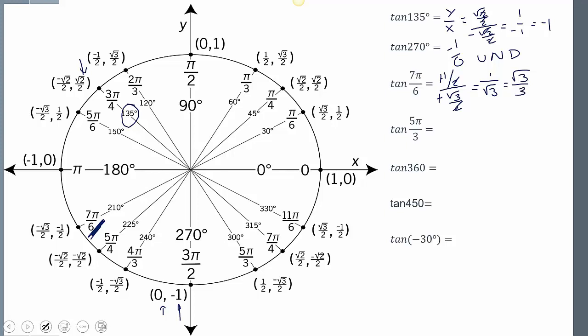At tangent of 5 pi 3rds. Well 5 pi 3rds is right here. Y over x again. So that's going to be negative radical 3 over 2 over 1 half. Well the 2's cancel out, and I get negative root 3.